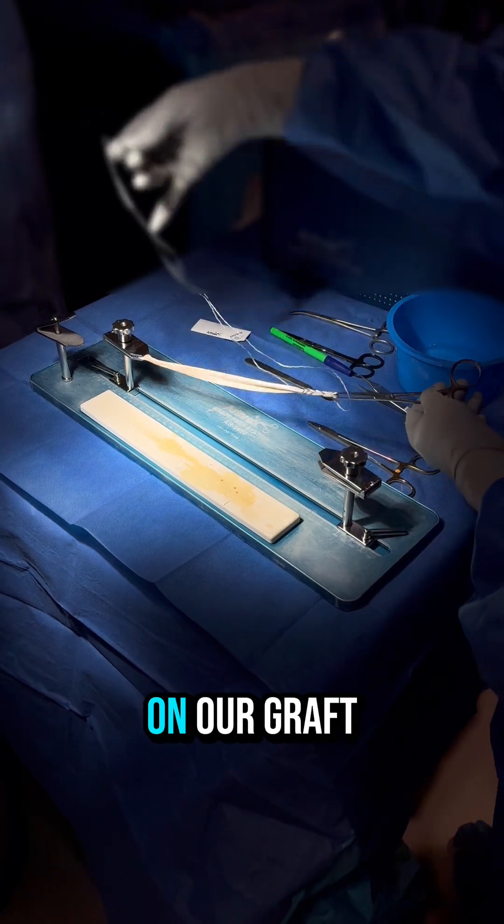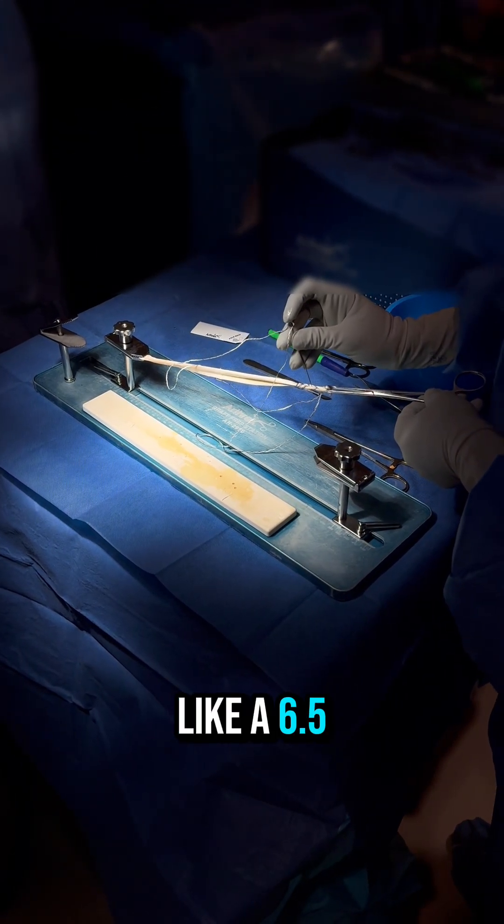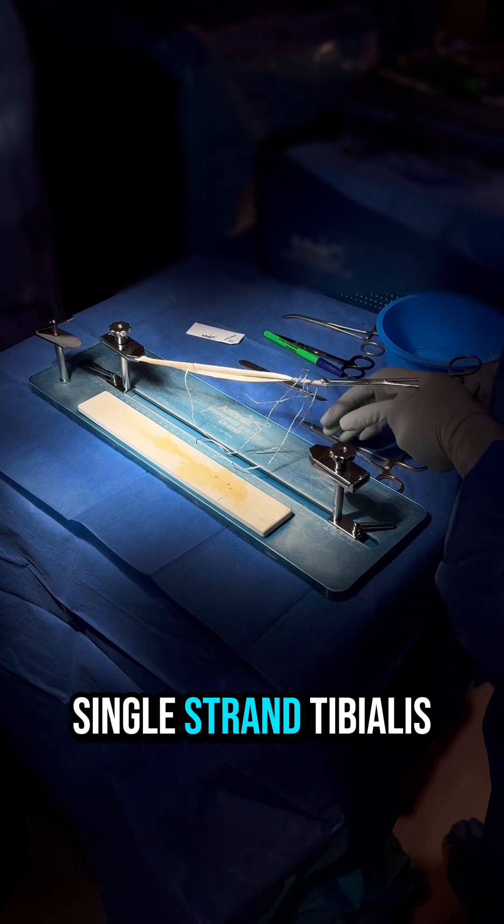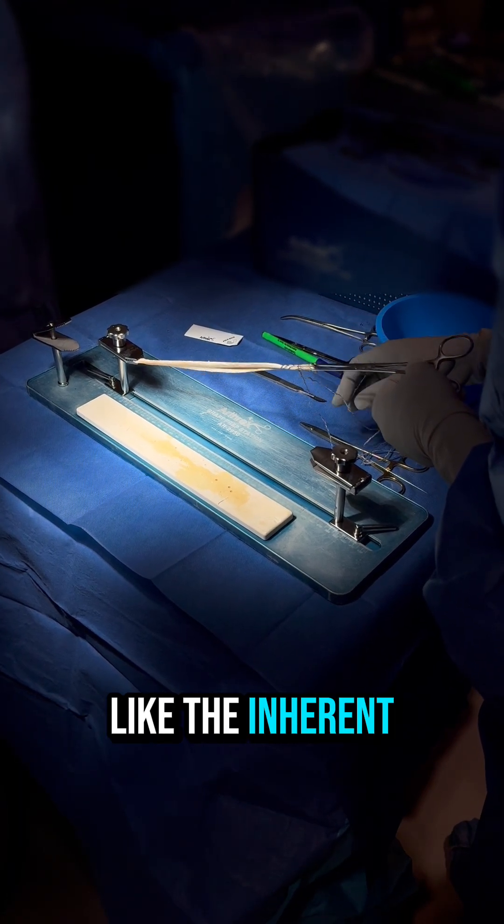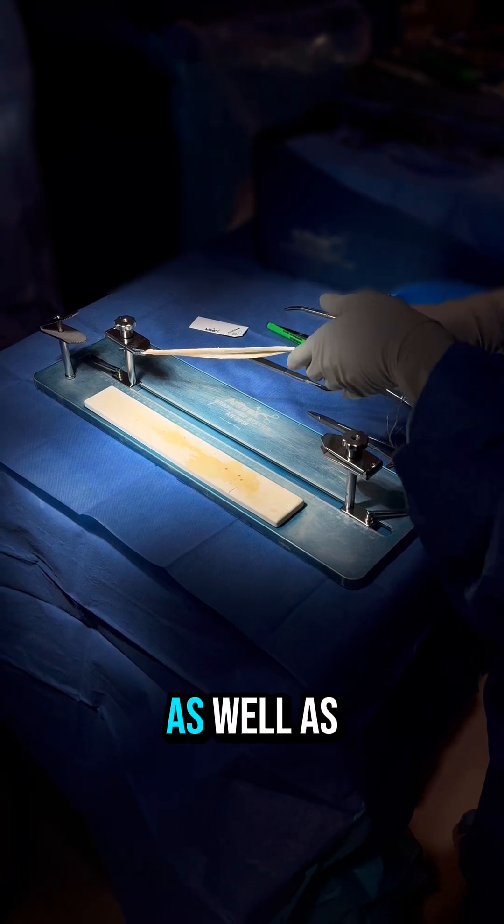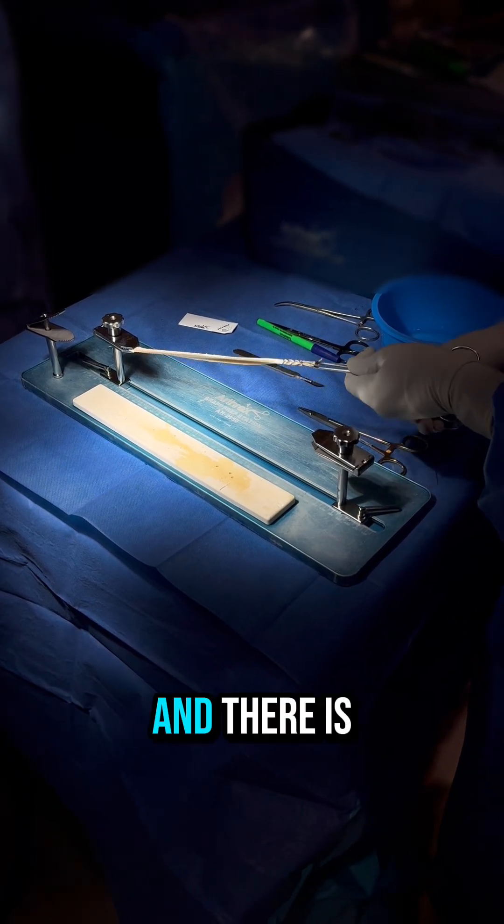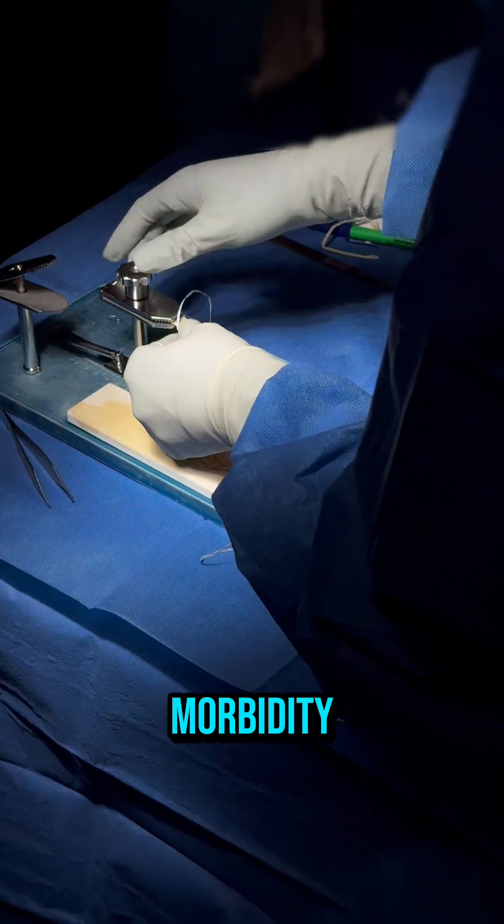A quick note on our graft preference: we tend to like a 6.5 or 7 millimeter single strand tibialis anterior posterior allograft. We like the inherent tubular shape of this graft as well as its ability to be very replicable, and there is no donor site morbidity.